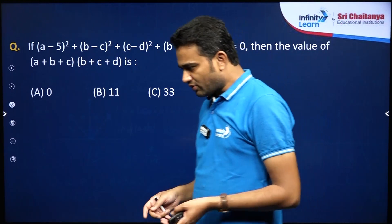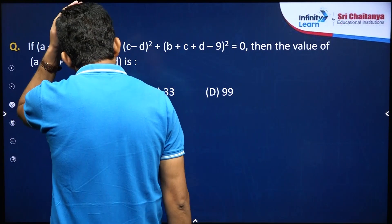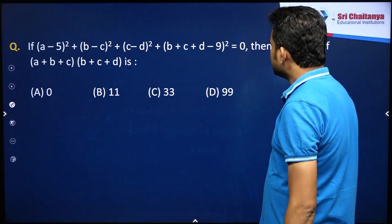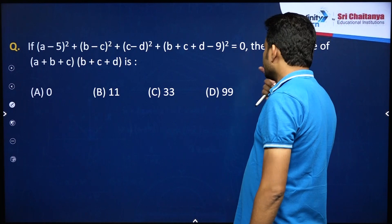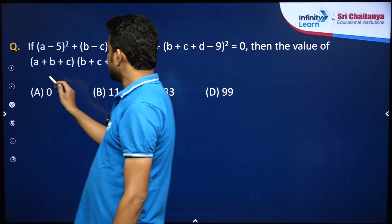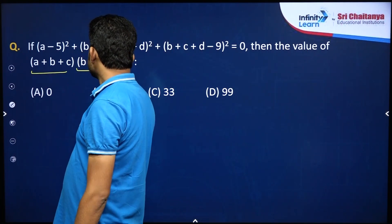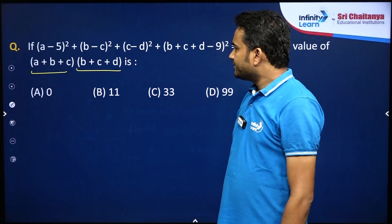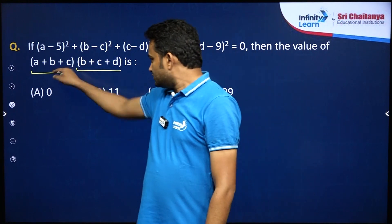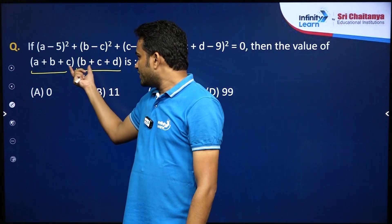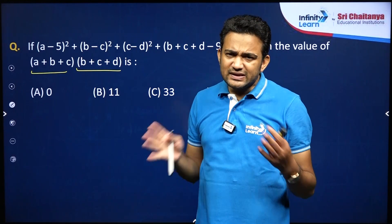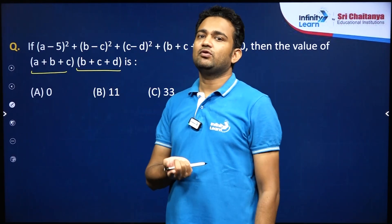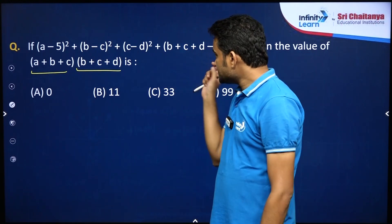Again, this is a very important question for Olympiads. If a minus 5 whole square plus b minus c whole square plus c minus d whole square plus b plus c plus d minus 9 whole square is 0, then the value of a plus b plus b plus c into b plus c plus d is what? To find this, we need to find the values of a, b, c, d separately.